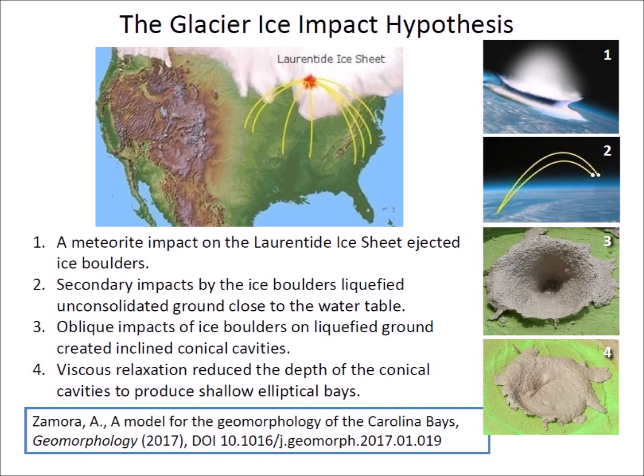In 2017, the Glacier Ice Impact Hypothesis proposed that the Carolina Bays and the Nebraska Rainwater Basins were made by secondary impacts of glacier ice ejected by a meteorite impact on the Laurentide Ice Sheet approximately 12,900 years ago. The impacts of the ejected ice chunks with energies of 13 kilotons to 3 megatons liquefied unconsolidated ground, and the ice projectiles created conical cavities inclined at about 35 degrees that were remodeled into shallow elliptical bays by viscous relaxation. The extraterrestrial impact and the saturation bombardment by the glacier ice boulders caused an extinction event and a global winter, deduced from the disappearance of the North American megafauna at the onset of the Younger Dryas cooling event.